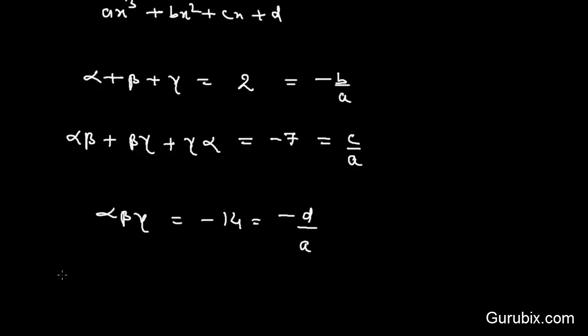Now we shall find the value of a, b, c, and d and put them in the required polynomial. So if a is equal to 1, if we write 1 in the denominator of all these values, then if a is equal to 1,